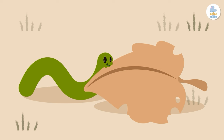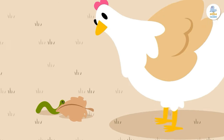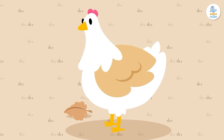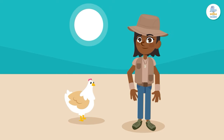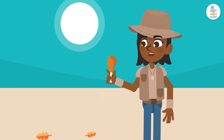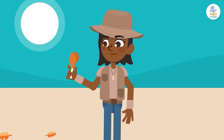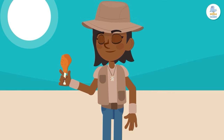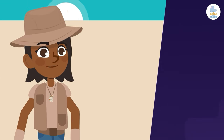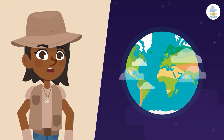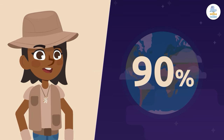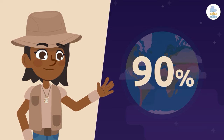Here we can see a hungry worm eating some delicious dead stuff, then a chicken eats the poor worm, and later a human eats the chicken. See, we're not too far removed from dead things in brown food chains! Brown food chains are extremely important for sustaining the earth's ecosystems. In fact, 90 percent of the food chains on earth are brown. Amazing, right?